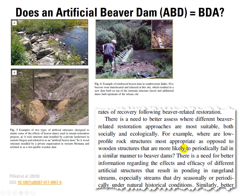They do put out a really good point: there's a need for better information regarding the effects and efficacy of different artificial structures that result in ponding in rangeland systems. I would also add there's a need to better assess where different beaver-related restoration approaches are most suitable — for example, where are low-profile rock structures most appropriate as opposed to wooden structures?